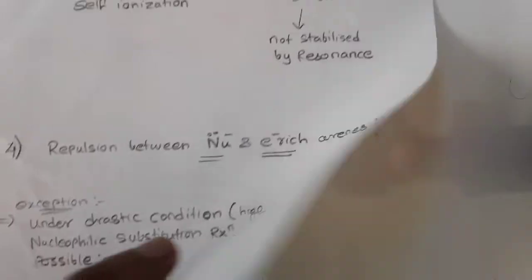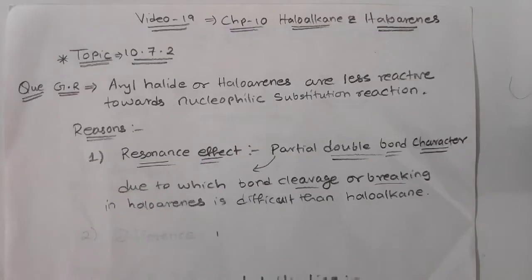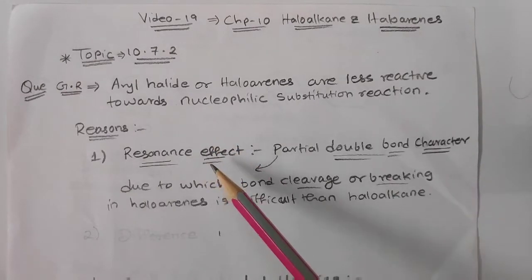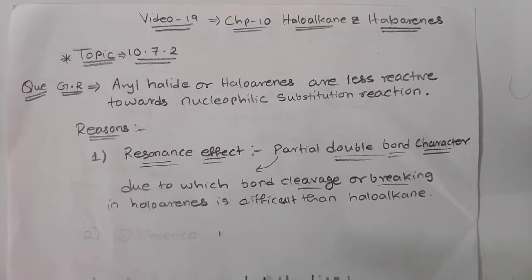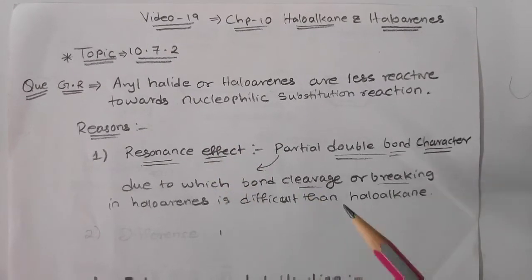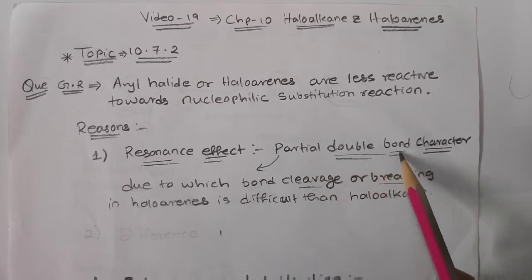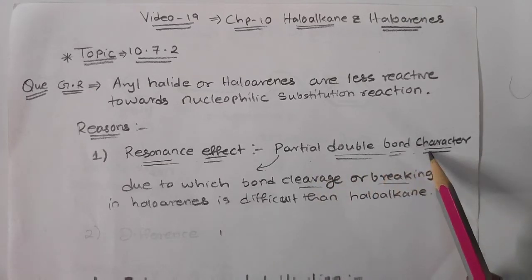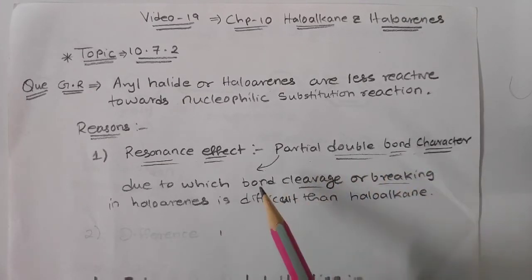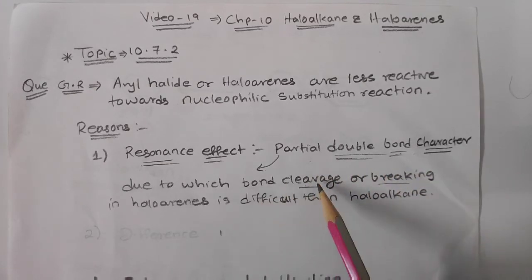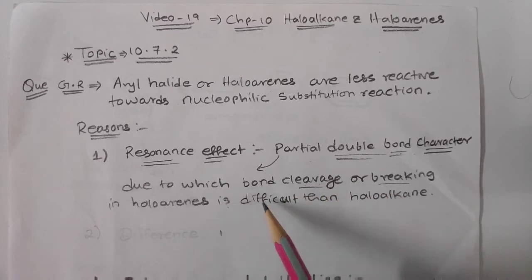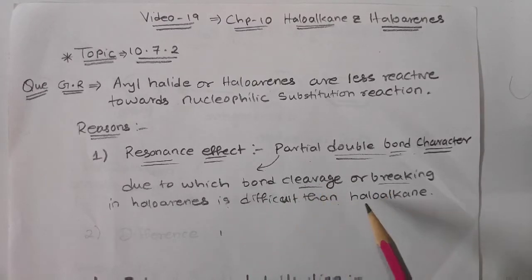Starting with the first reason: resonance effect. Due to resonance, there is formation of a partial double bond character, due to which bond cleavage — that is, breaking — in haloarenes is more difficult than in haloalkanes.